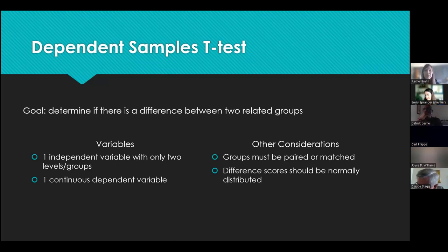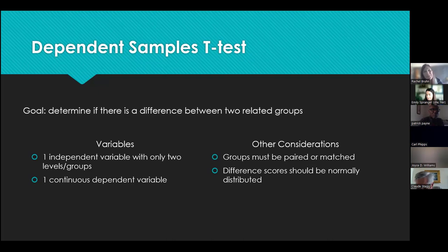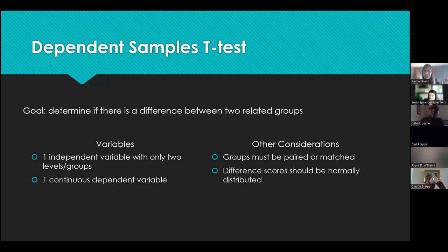The same variables apply: an independent variable with two groups and a continuous dependent variable. With the pre-test/post-test design, both groups are the same people measured at different times. For independent samples, the dependent variable for both groups needed to be normally distributed. For dependent samples, since we're looking at change from one group to the other, we compute the difference between the two groups and then look to see if those differences are normally distributed.